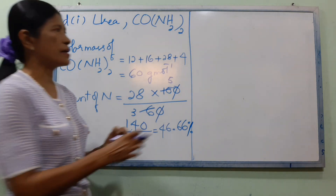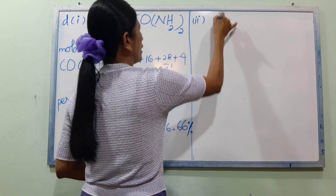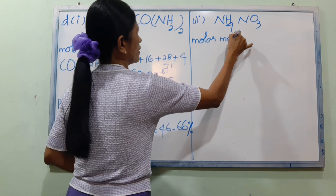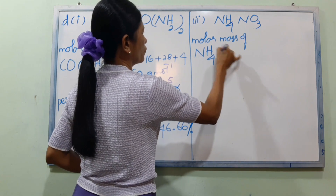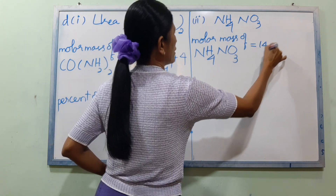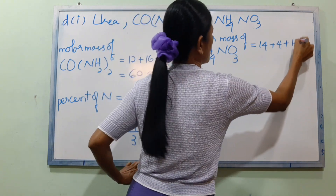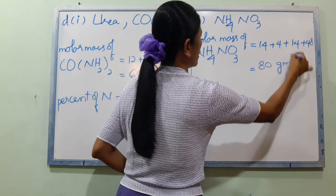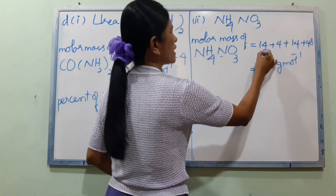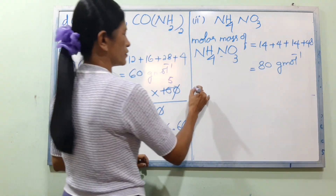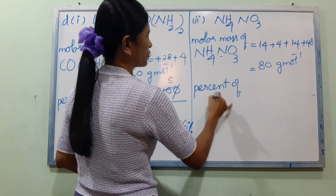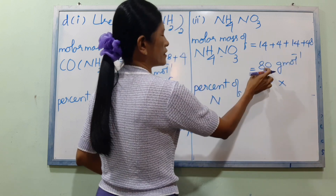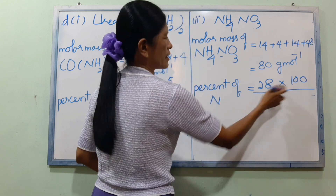Now we have ammonium nitrate. Ammonium nitrate formula is NH₄NO₃. The formula NH₄NO₃ — we are using NH₄NO₃ to calculate the percentage of nitrogen. The molar mass of NH₄NO₃ is 80 grams per mole.